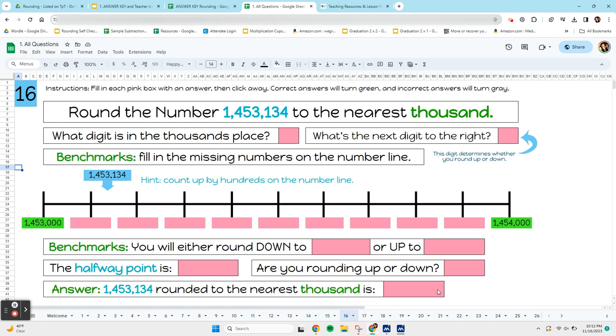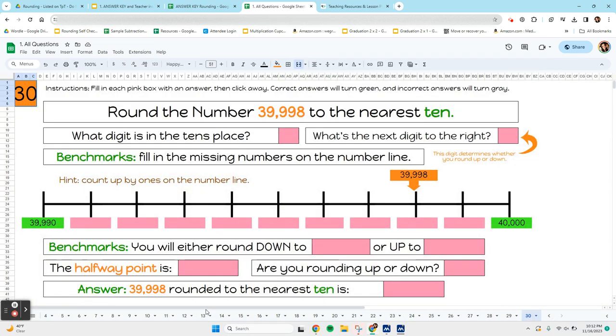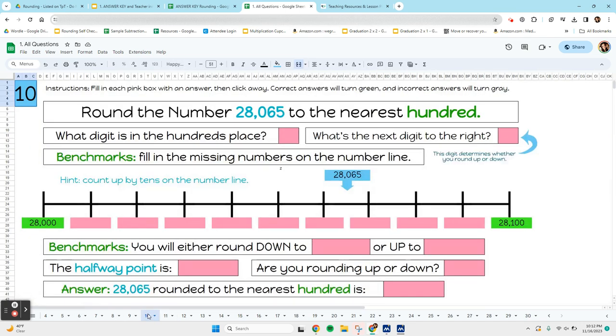You might have 30 tabs, in which case you have to use these little arrows to navigate. Or you might just have one tab, or you might just have 10 tabs, and that's just however many questions you have.